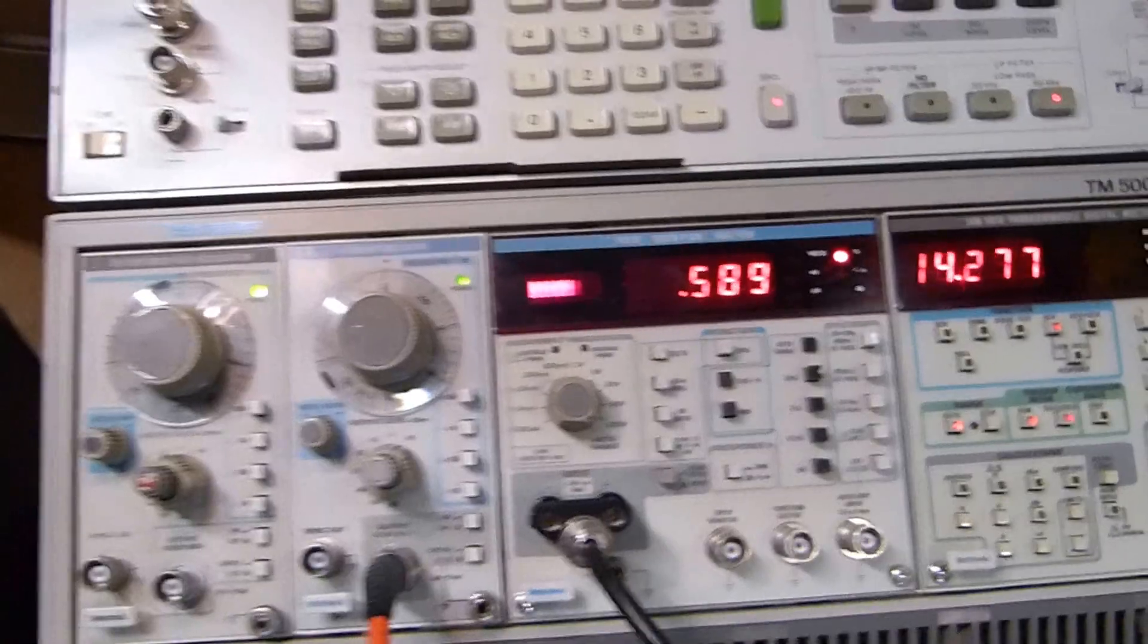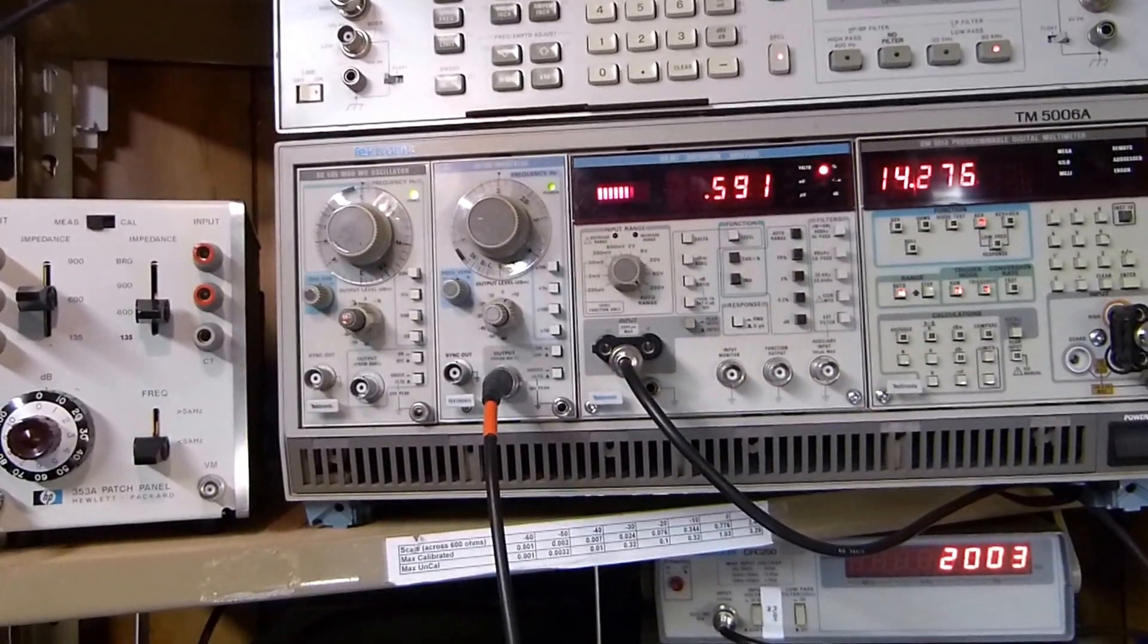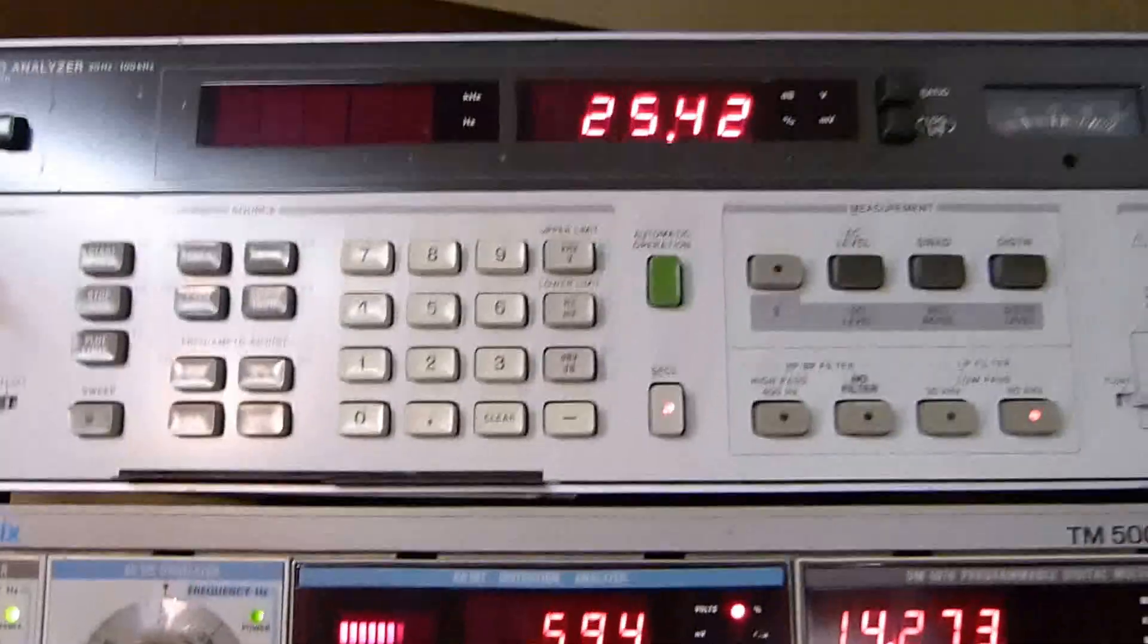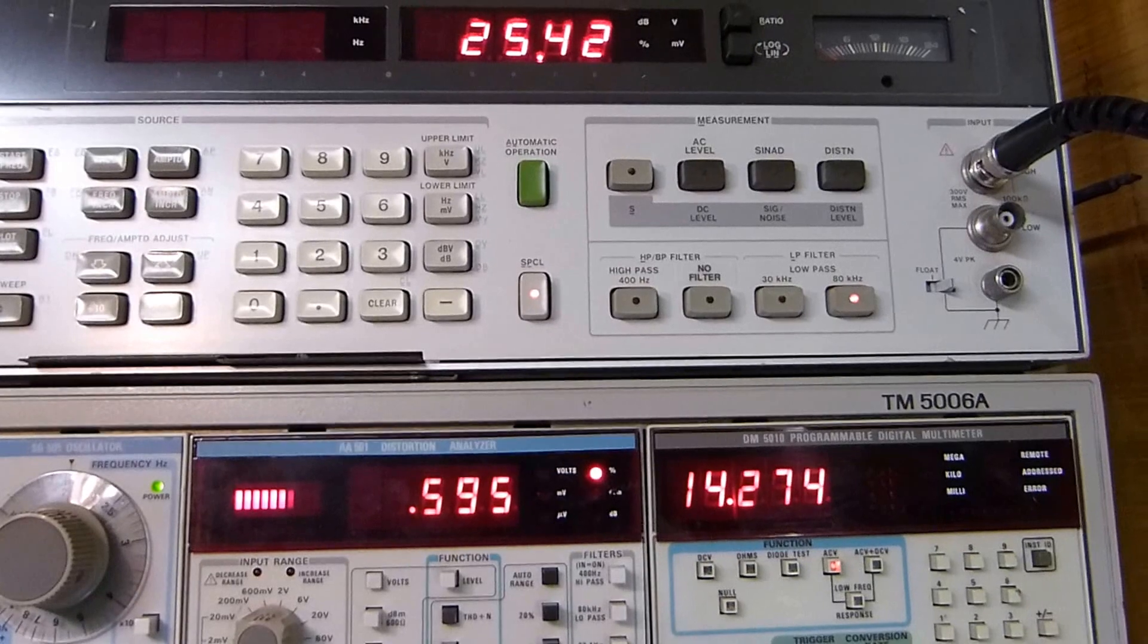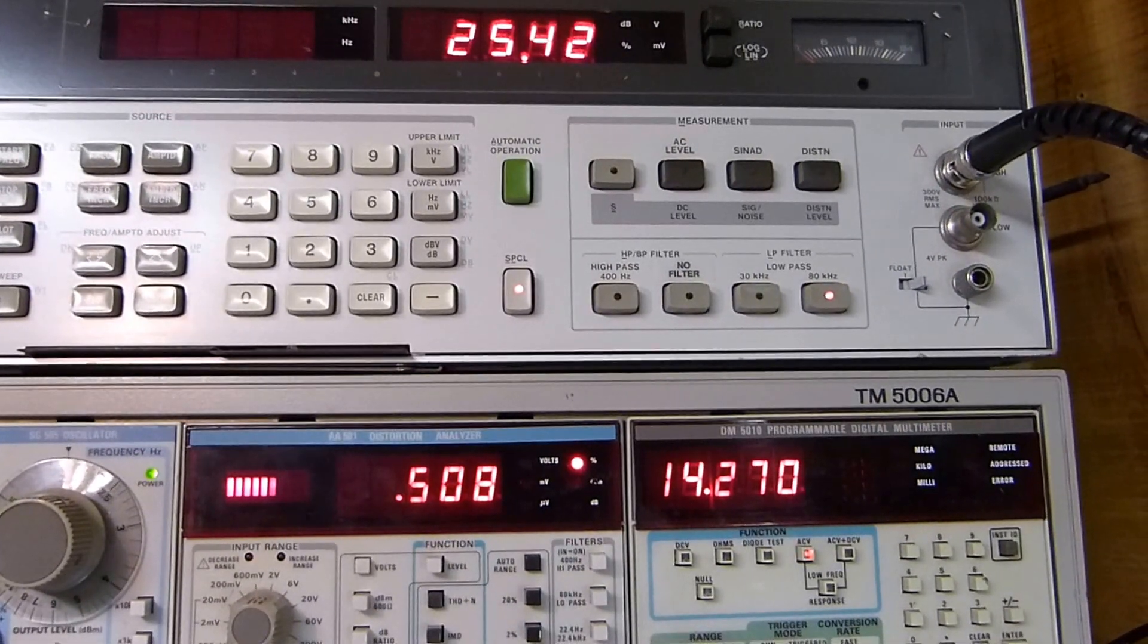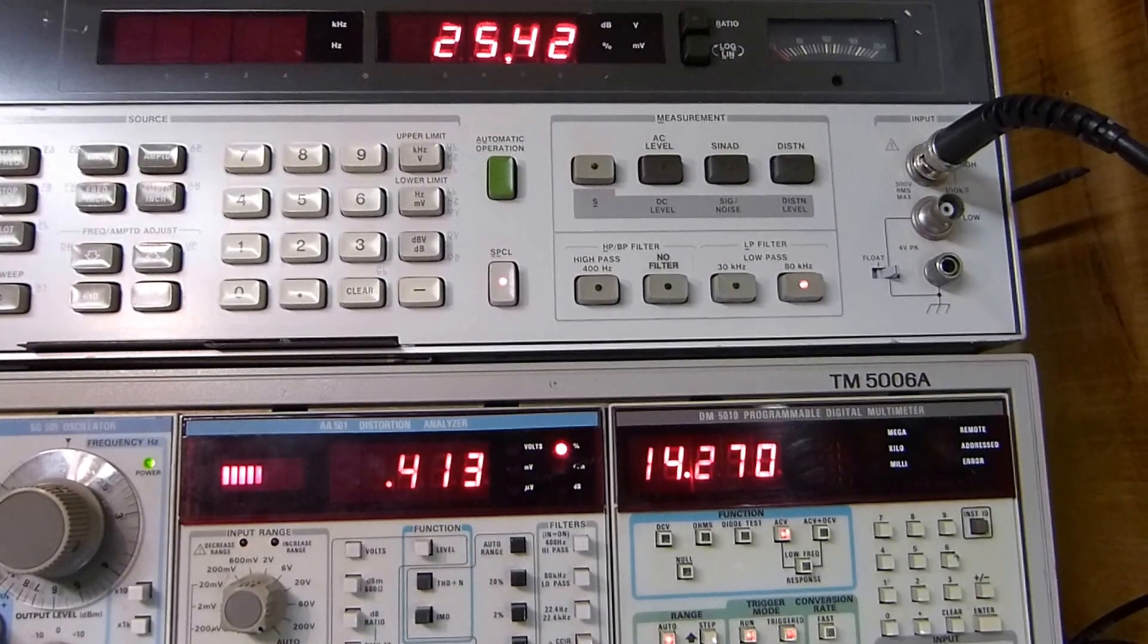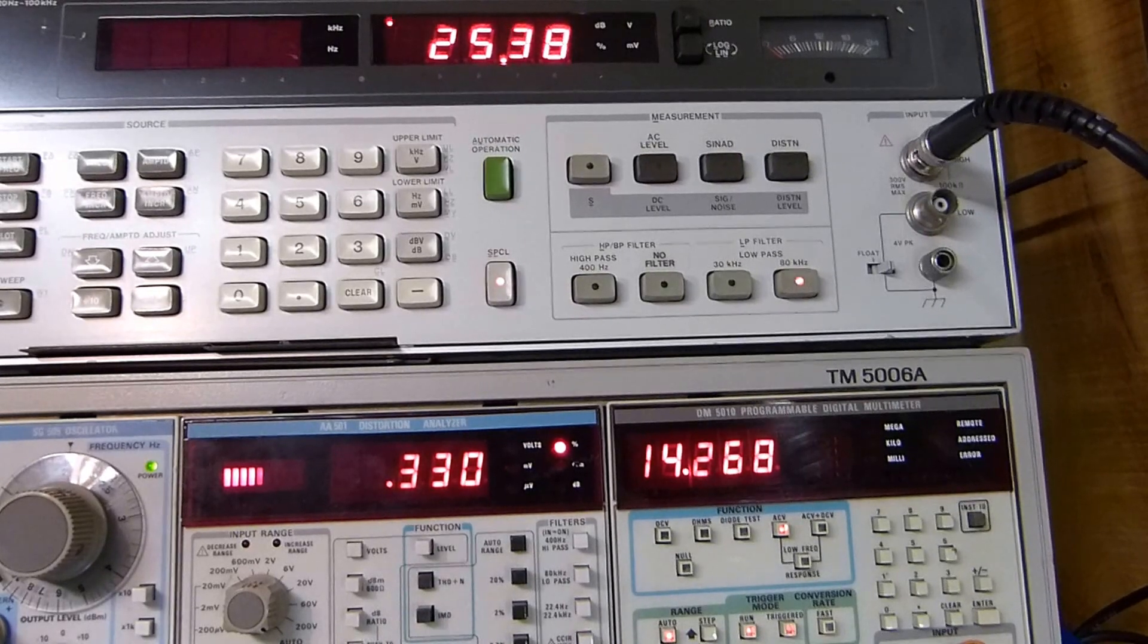So now we're just going to simply tweak this thing until it actually is the lowest. I'm going to start back counterclockwise. We're going to basically be watching this because our power is going to stay the same, but we're going to be watching the distortion. 0.592, 0.57, 0.450, 0.479, 0.450, 0.414, 0.363, 0.330, 0.28, 0.26.